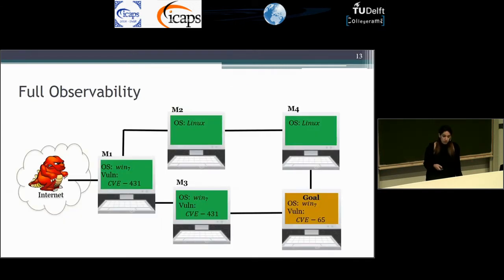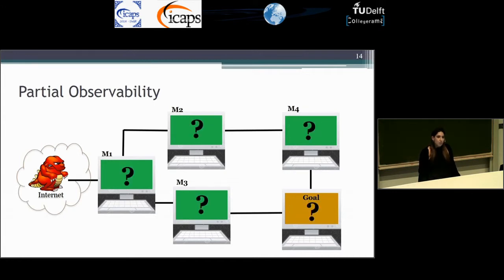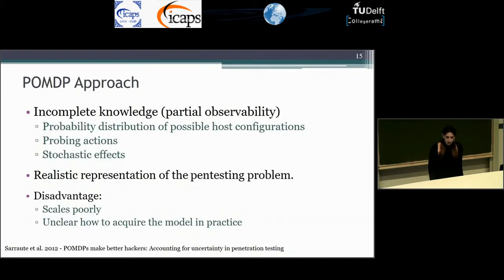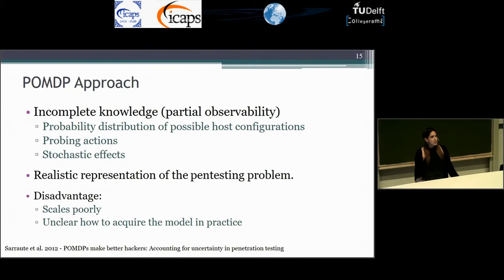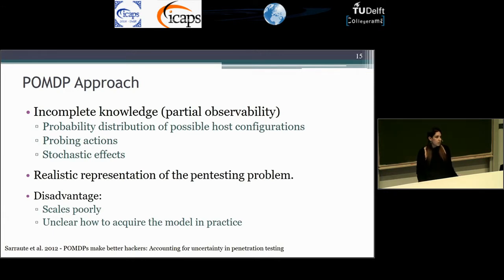These are the settings for full observability and now we want to move to partial observability. Now the attacker does not know each machine's configuration and which vulnerability exists in each machine. The POMDP approach captures the incomplete knowledge of the attacker by adding a probability distribution to the possible host configurations initially, and we have sensing actions that reveal the operating system and software values of machines, and we have stochastic effects — an exploit action may fail or succeed with some probability. So we can represent much better the attacker's knowledge about the network.